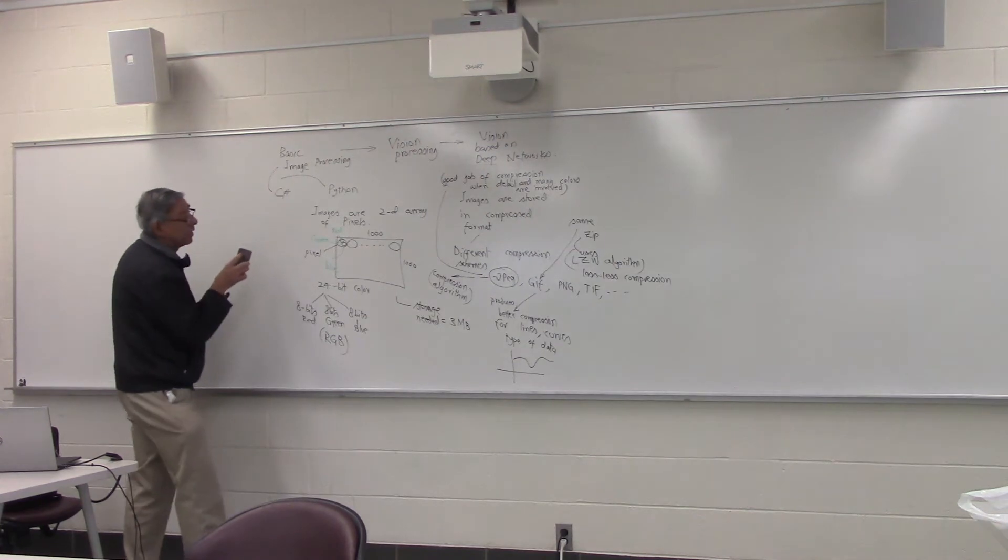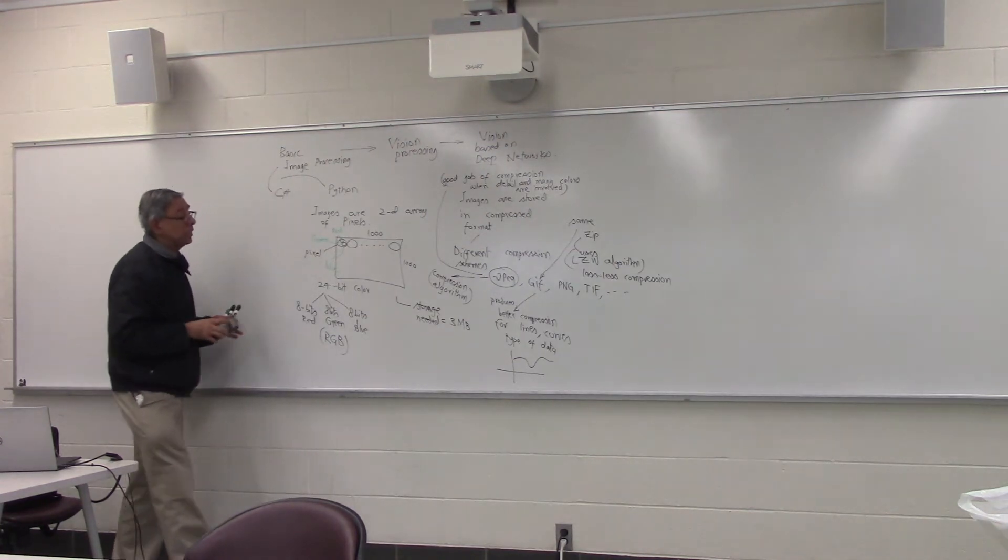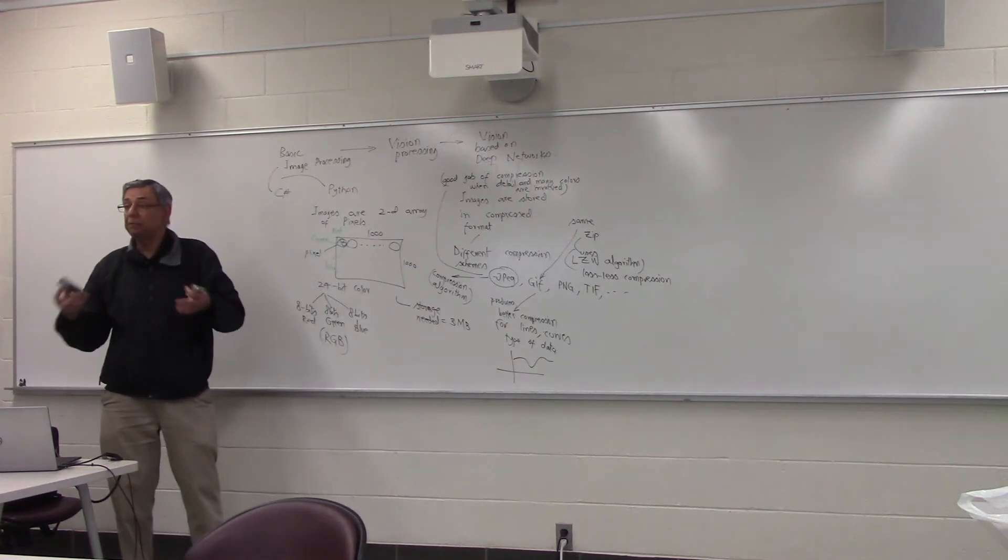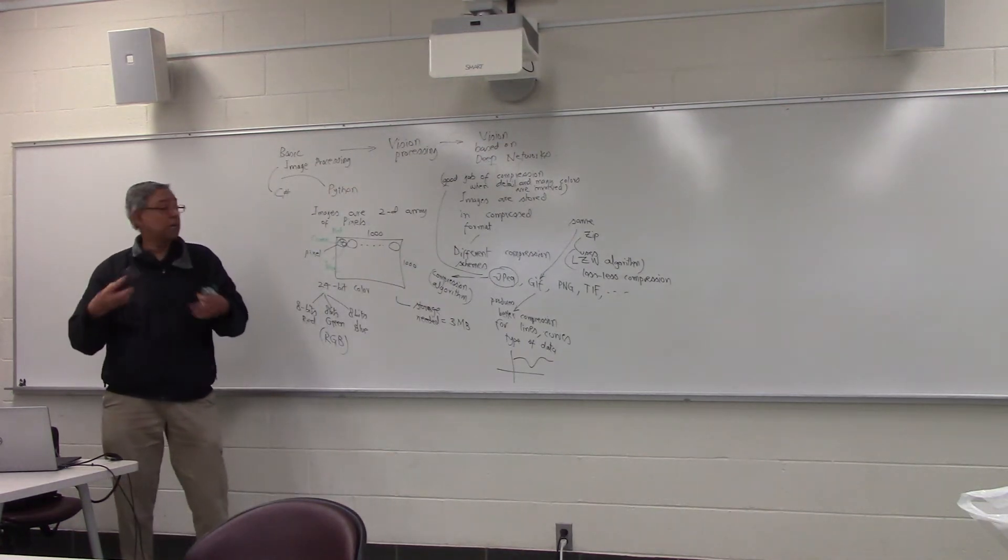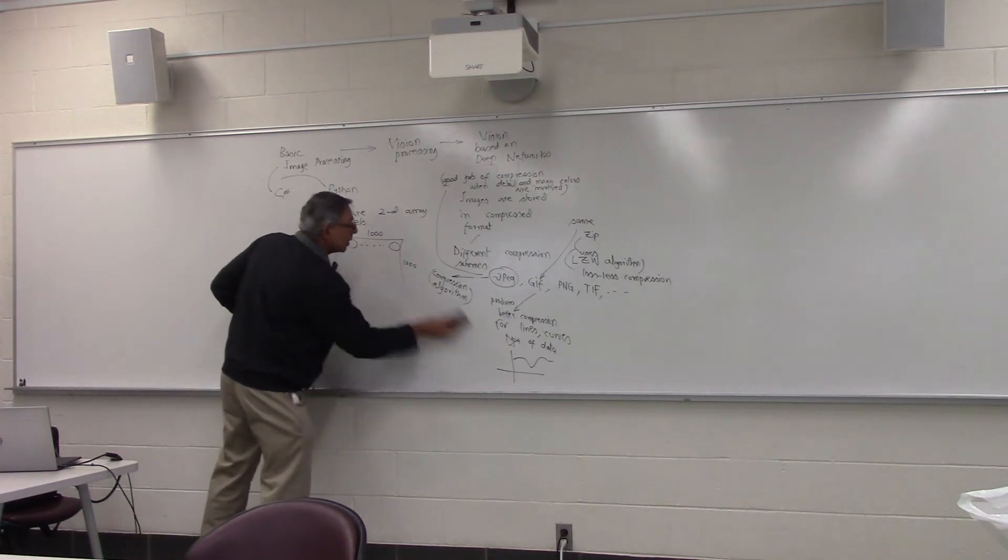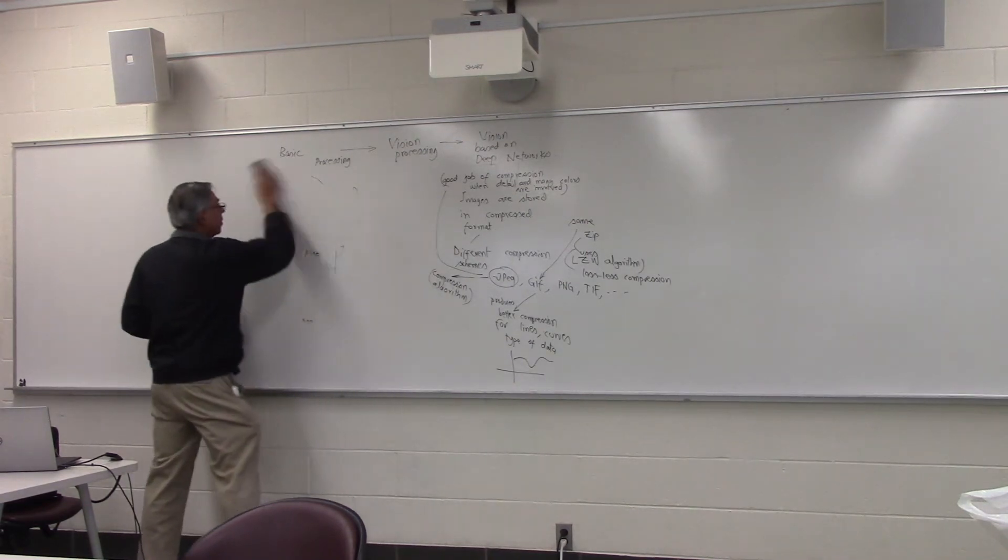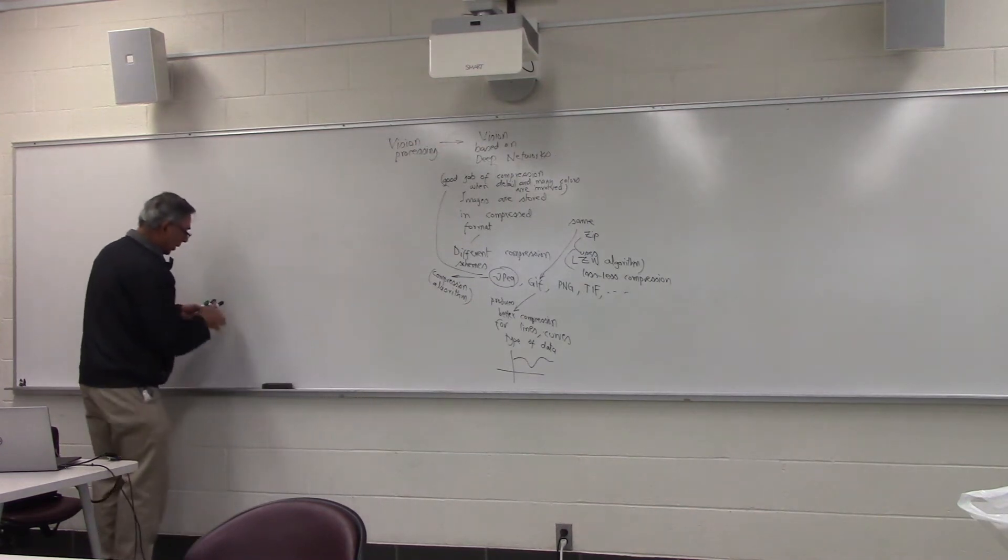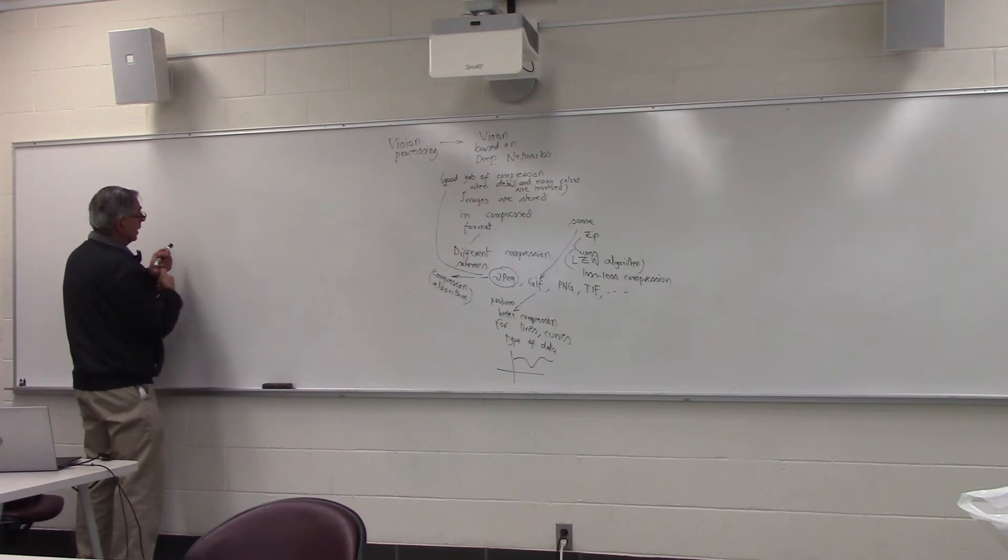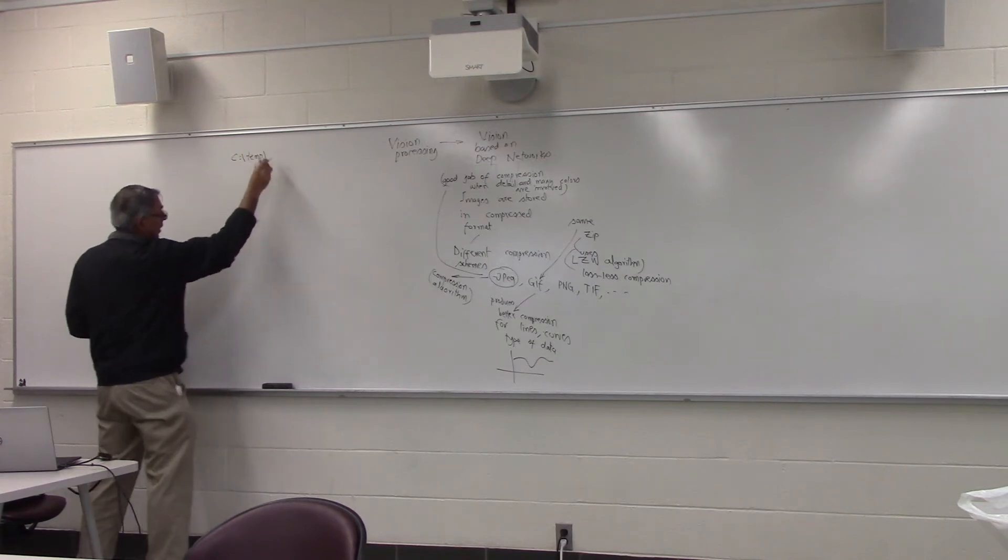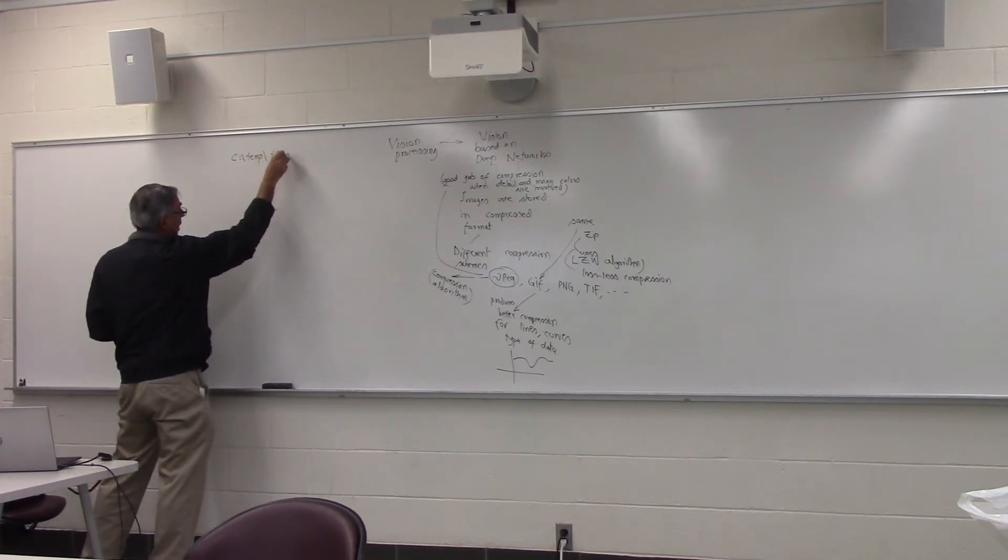So now let's talk about, somebody took a picture from a digital camera. They gave us a JPEG file. How do we view it? How do we enhance it? How do we do some image processing on it? Let's say on your computer, somewhere on the C drive, in your temp folder, you have some file T1.jpg.